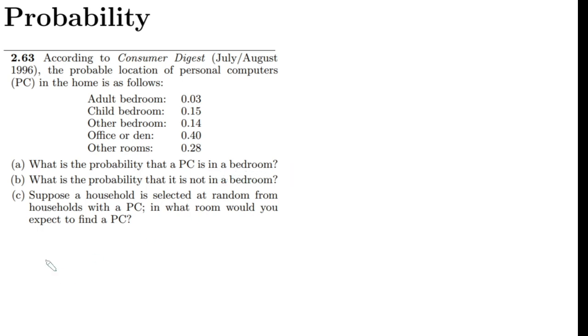Now let me solve it. This is part (a) and in part (a) I have to find the probability that a PC is in the bedroom. In order to find the PC in a bedroom, we have here one, two, three options for the bedroom.